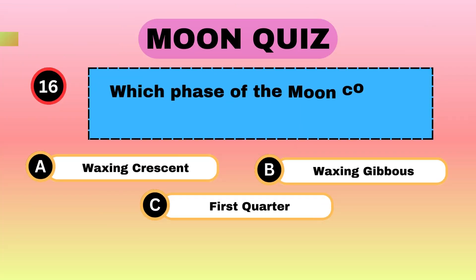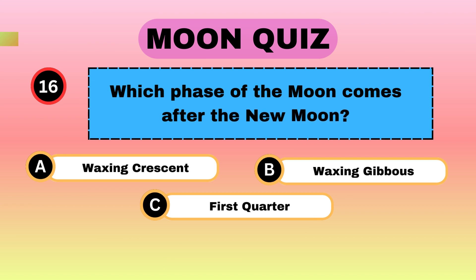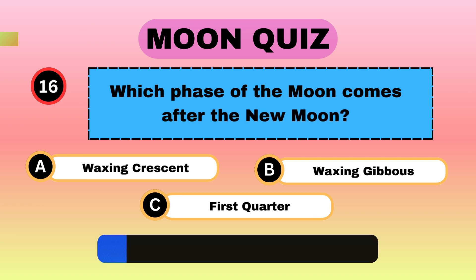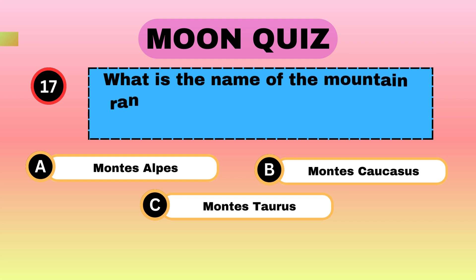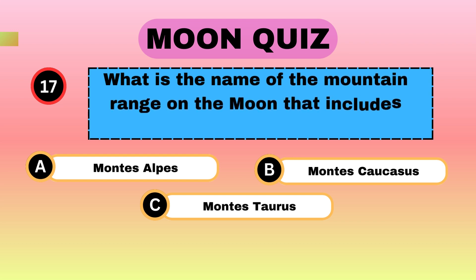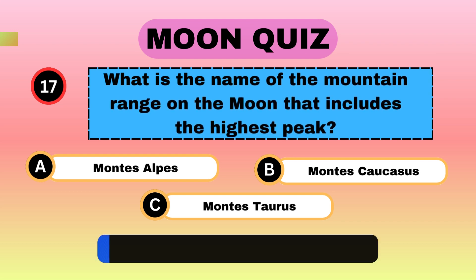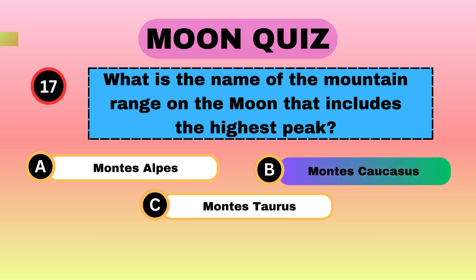Which phase of the Moon comes after the new Moon? Waxing crescent. What is the name of the mountain range on the Moon that includes the highest peak? Mons Caucasus.